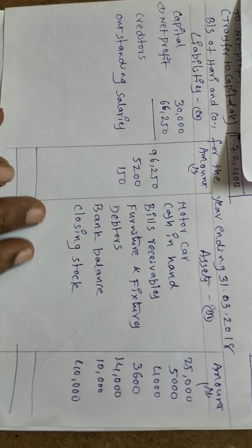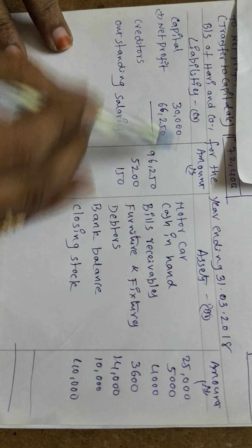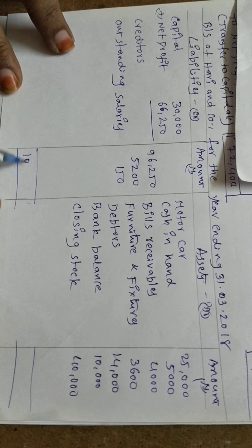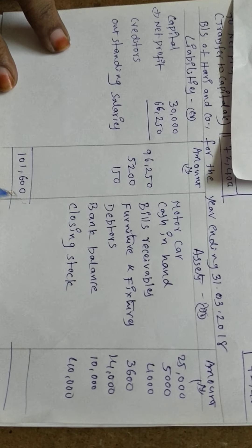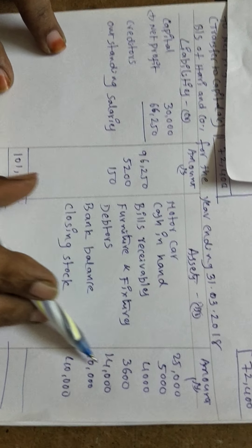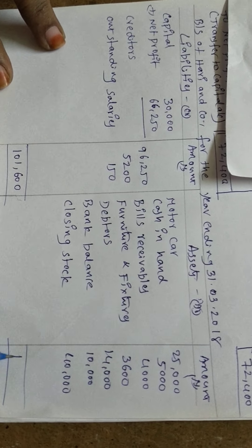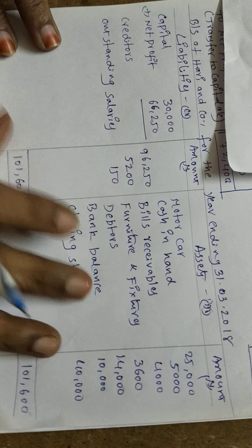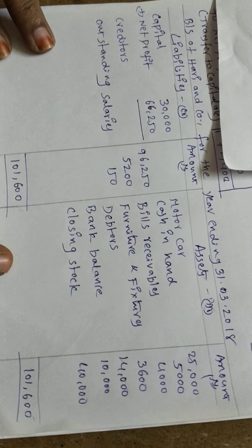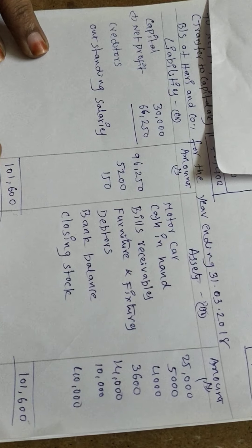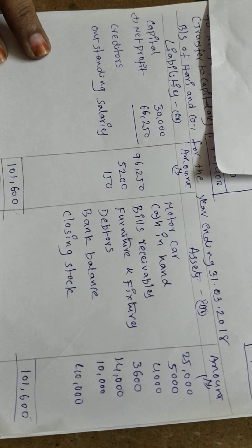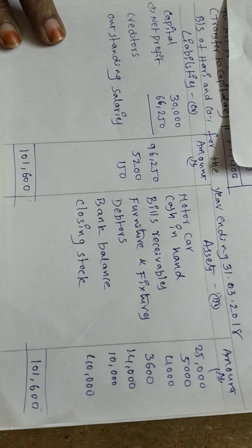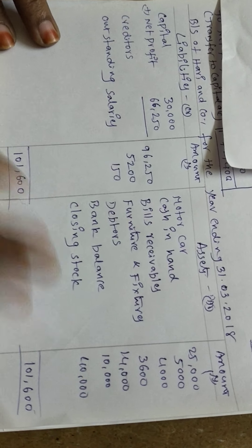Now we add both sides. Liability side total: one lakh one thousand six hundred. Asset side total: also one lakh one thousand six hundred. Both sides tally, so our balance sheet is correct.